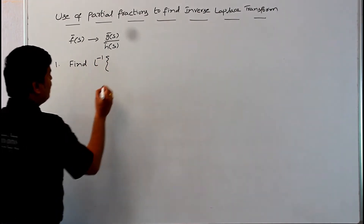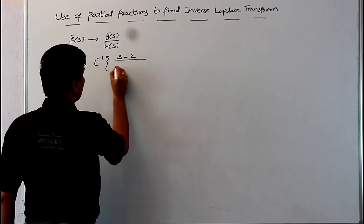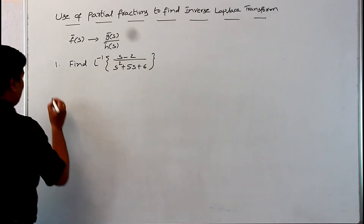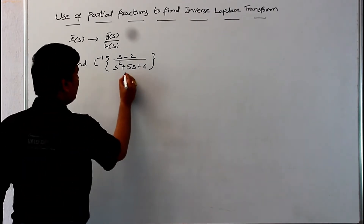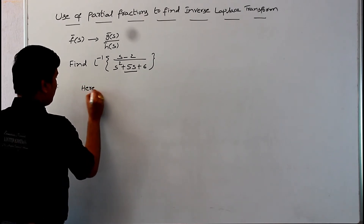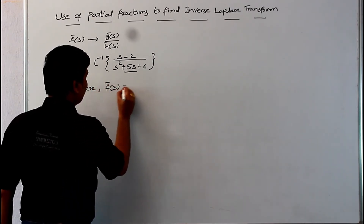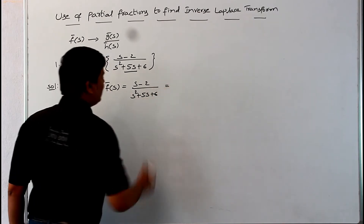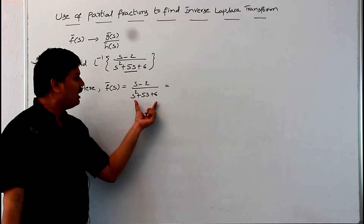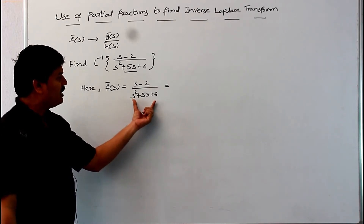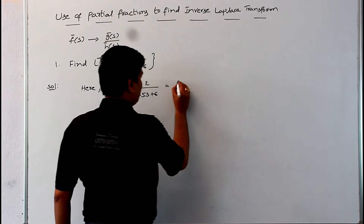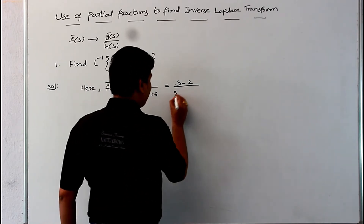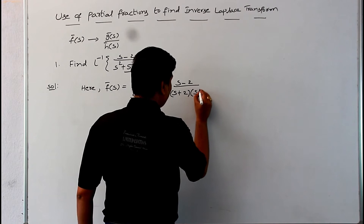Find the inverse Laplace transform of (s minus 2) divided by (s squared plus 5s plus 6). The solution: f-bar of s is equal to (s minus 2) by (s squared plus 5s plus 6). First we write the factors of the denominator s squared plus 5s plus 6, which are (s plus 2) into (s plus 3).